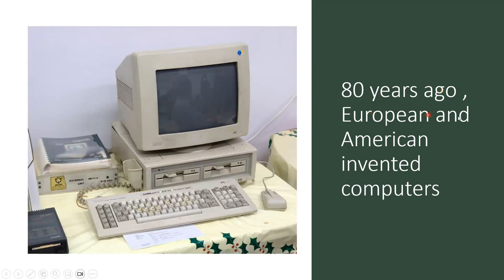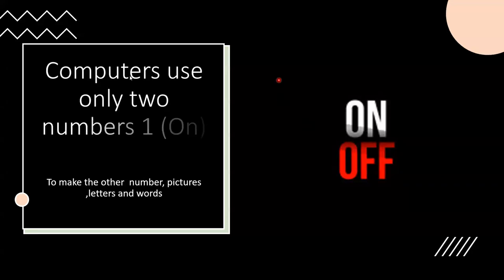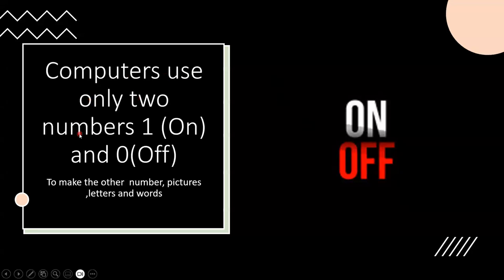80 years ago, Europeans and Americans invented computers. This is a computer — they invented it 80 years ago. Computers use only two numbers: one as 'on' and zero as 'off,' to make the other numbers, pictures, letters, and words. If I want to make anything in the computer, I use just these two numbers: one and zero.